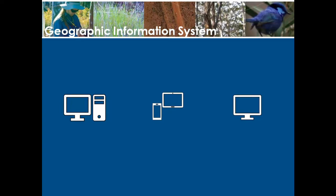A healthy GIS is in fact not just made up of the software alone — it's also a combination of skilled people, well-provisioned hardware, reliable data, and operating standards. The computer on which the software is installed needs to be powerful enough, the layers of information need to be up to date and of good quality, and the people using it need to have the right skills to operate the software.